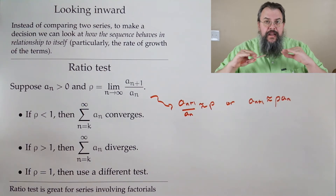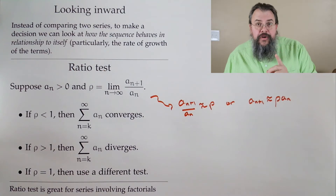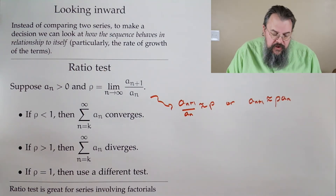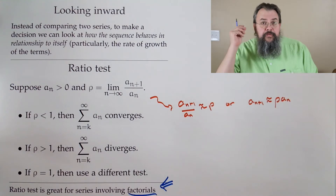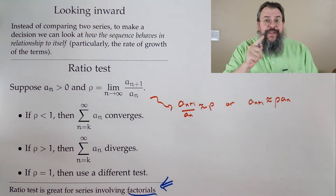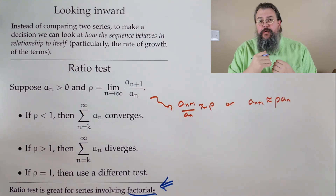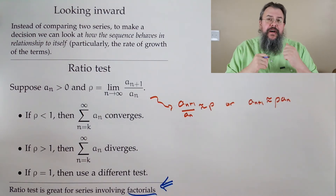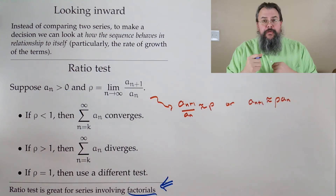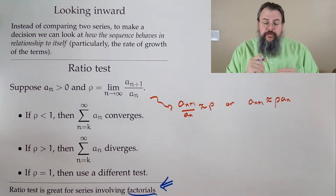The ratio test is great for anything which involves factorials. So if you see a factorial, in the back of your mind you should think ratio test. Why? Factorials are kind of hard to work with because they're not really a nice continuous function. A lot of the things we have don't mesh well with factorials, but they do work really well when you look at ratios of factorials.